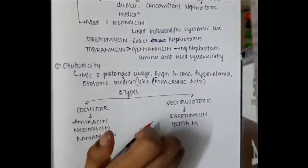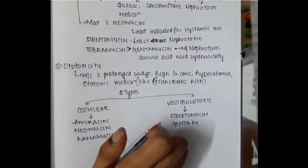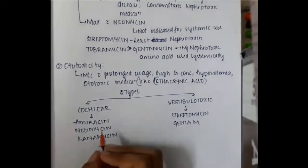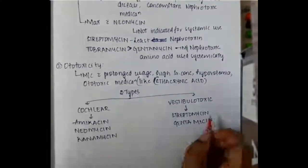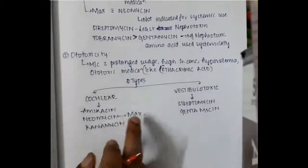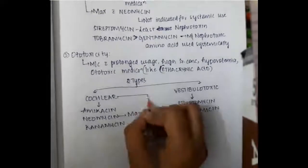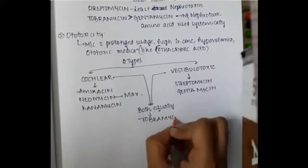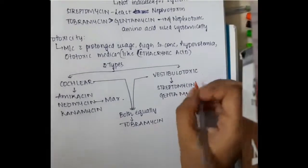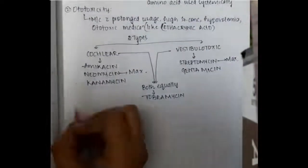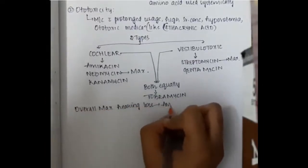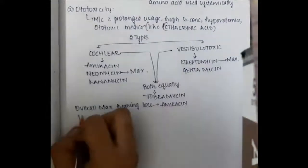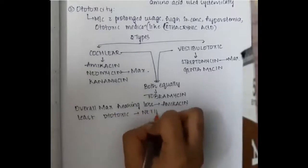Streptomycin and gentamicin are the two main vestibulotoxic drugs, with streptomycin showing maximum vestibulotoxicity. Neomycin shows maximum cochlear ototoxicity. Tobramycin shows both cochlear and vestibulotoxicity equally. Overall, maximum hearing loss is seen with amikacin, and the least ototoxic drug is netilmicin.